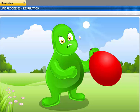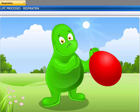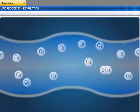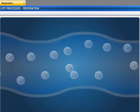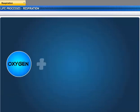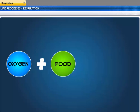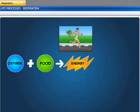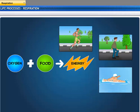Phew! I am out of breath. Let me get some air. Air is vital for us as it contains oxygen. Oxygen is used to break down the food we eat into energy. This energy in turn is used by us for various activities like running, walking, swimming and cycling.